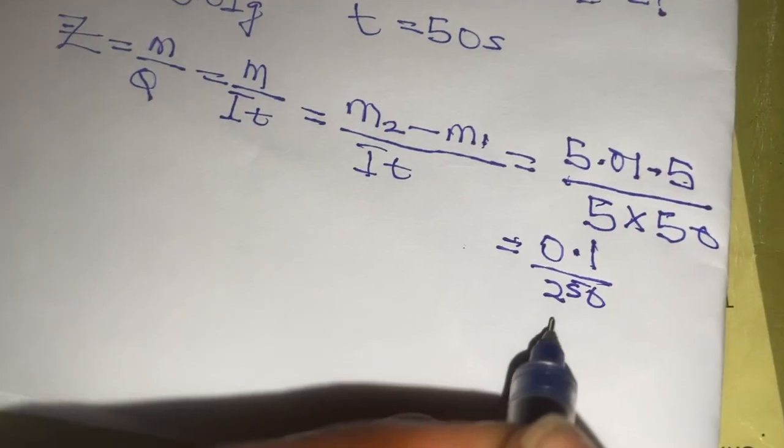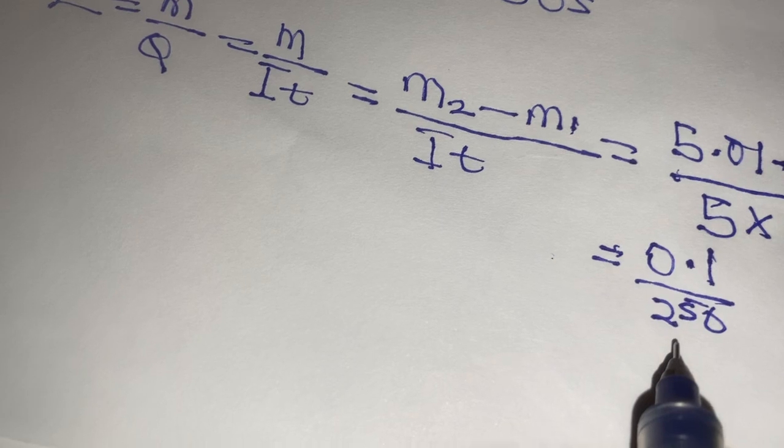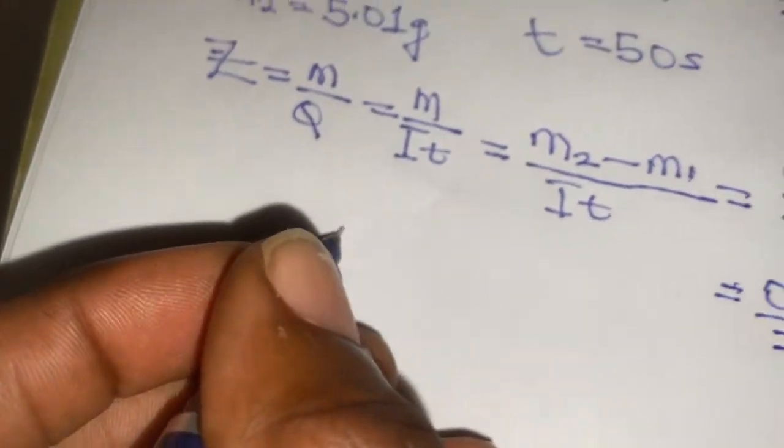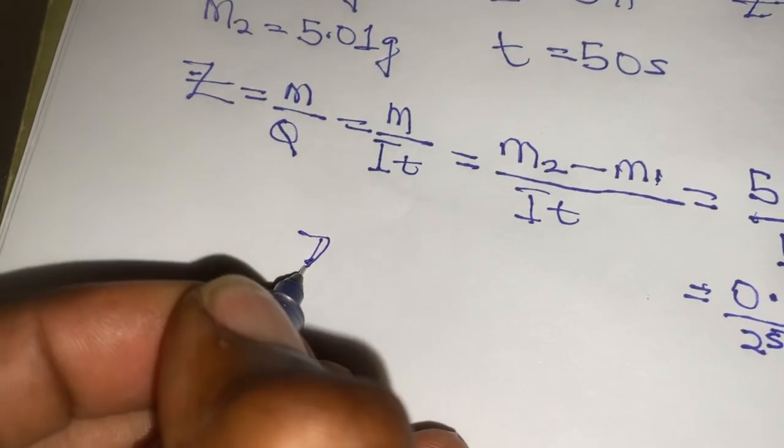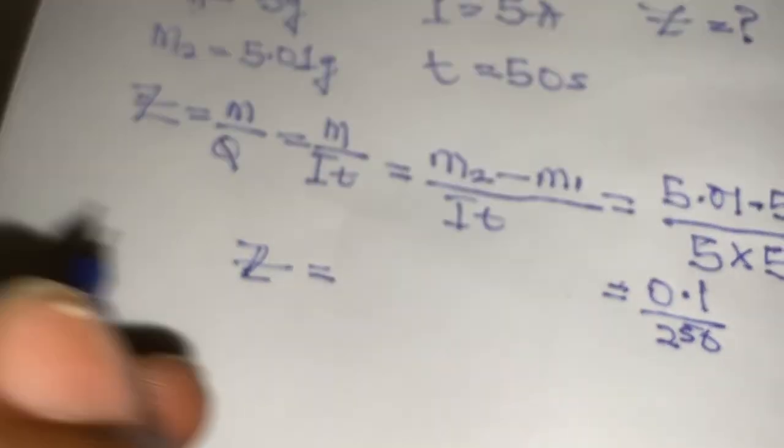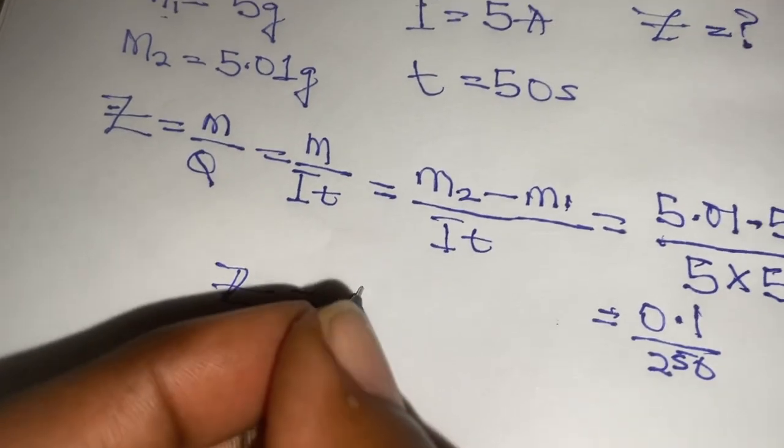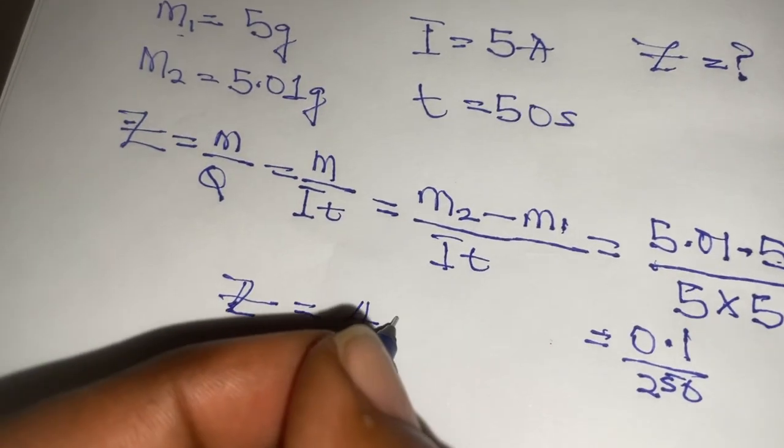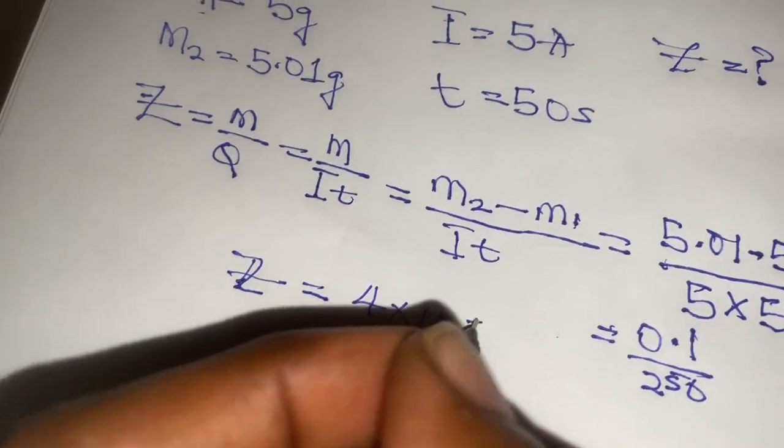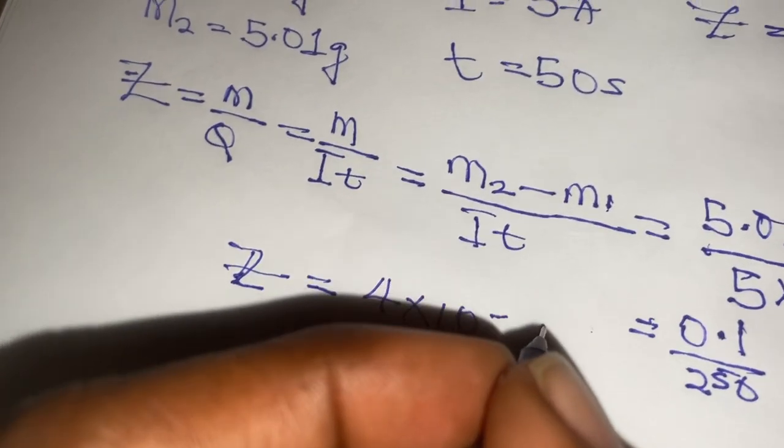Therefore, when we calculate this, 0.1 divided by 250, this is going to give us Z equals to 4 times 10 to the power of minus 5.